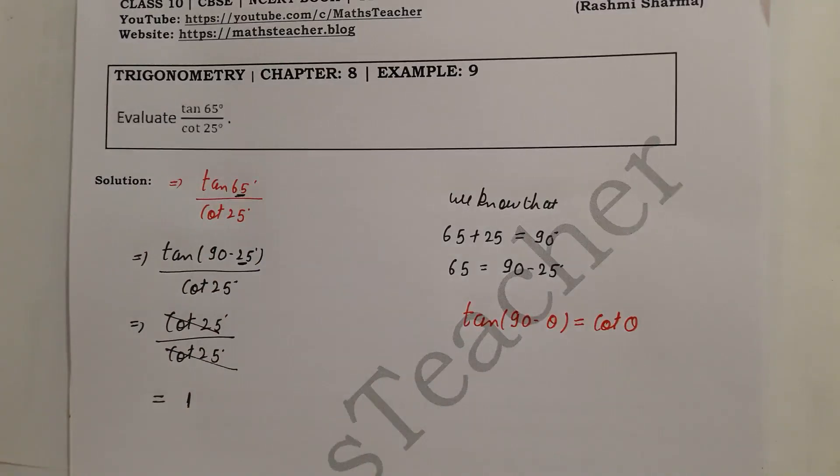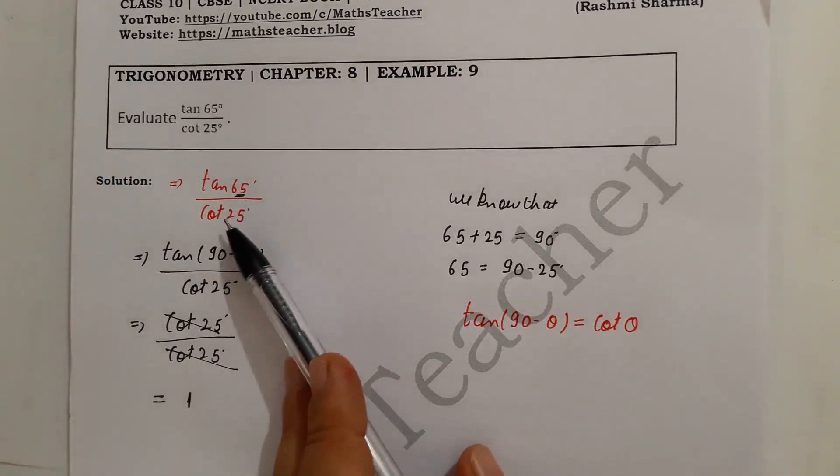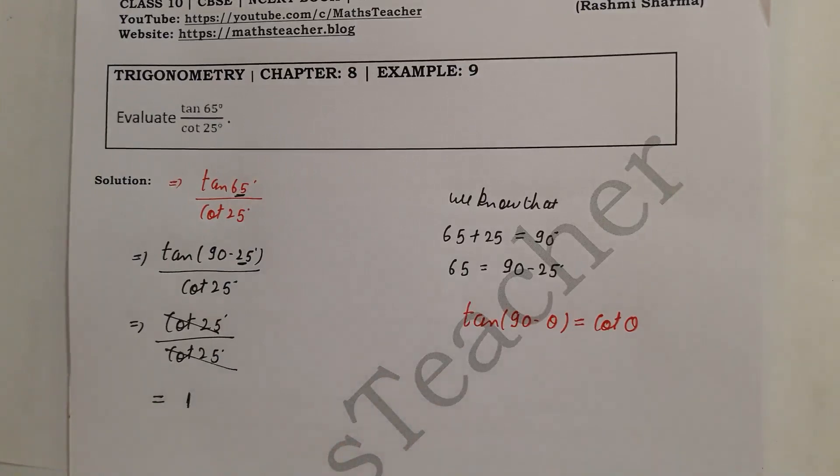So how do you solve it? You have to use complementary angles, then you have to pair - just change one thing and not both. Change one angle, not both, then they will be equal and cancel. If there is any doubt, please comment in the box. Thank you.